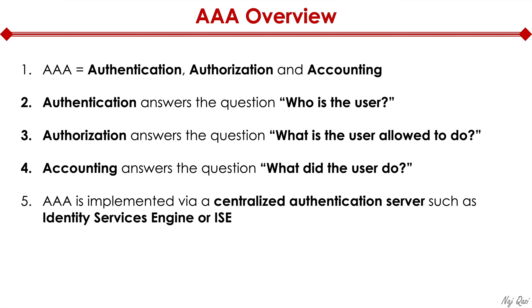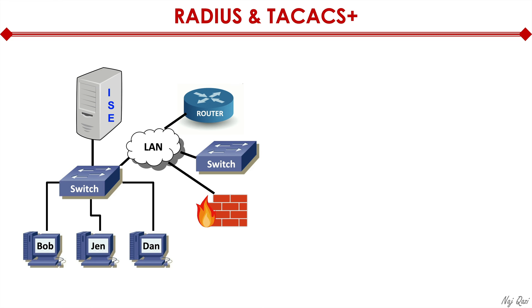AAA is implemented via a centralized authentication server, such as Identity Services Engine, or ISE. Let's look at a quick environment. We have a couple of users — Bob, Jen, and Dan — connected to a LAN switch. There's an ISE server also connected to the same switch. Then we have a LAN with a router, another switch, and a firewall.